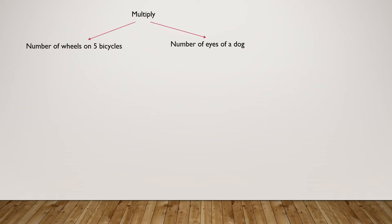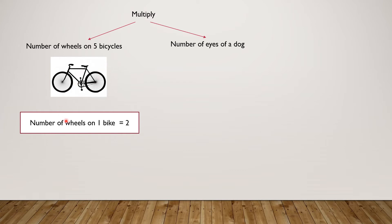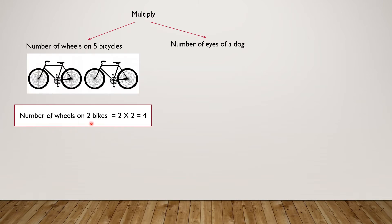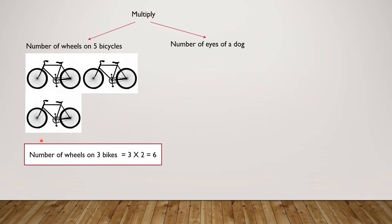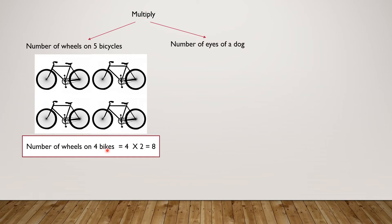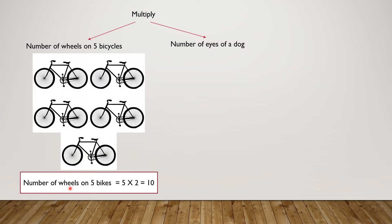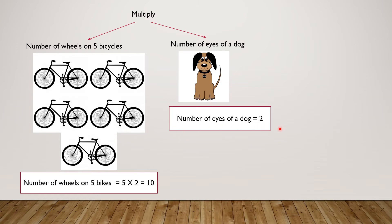Let's review this. So we have to multiply the number of wheels on five bicycles by the number of eyes on a dog. The number of tires or wheels on one bike is two. Number of wheels on two bikes is four. Number of wheels on three bikes is six. Number of wheels on four bikes is eight. And number of wheels on five bikes is ten. So the number of eyes on a dog? Right, of course, there are two eyes on a dog.